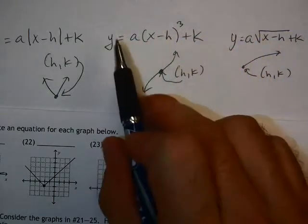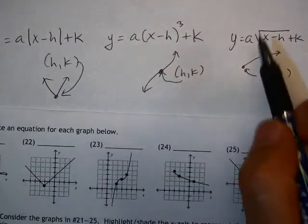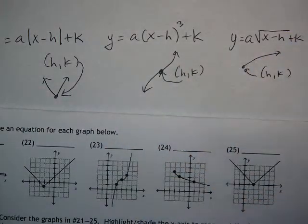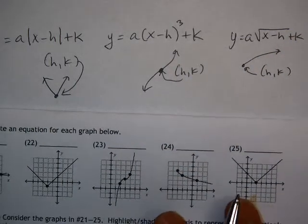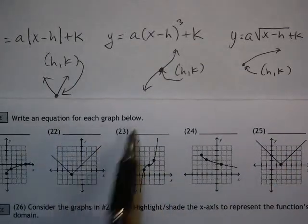Now again, just like the absolute value, these a values either flip the graph upside down or they make it skinnier or wider. But again, we'll see if that happens on these three examples. Now in number 22, we're asked to write an equation for each graph below.